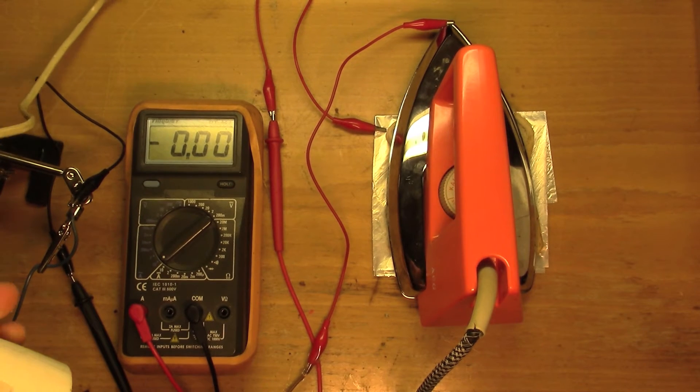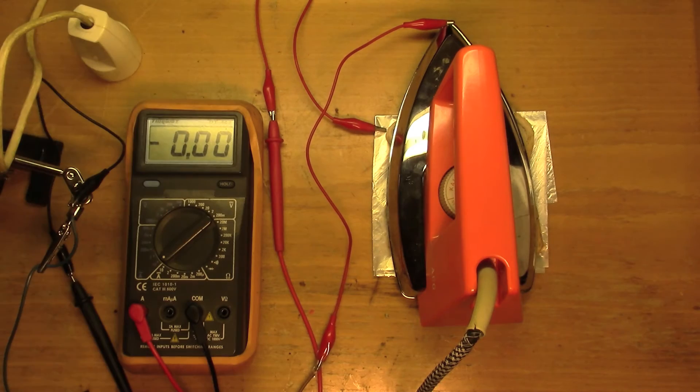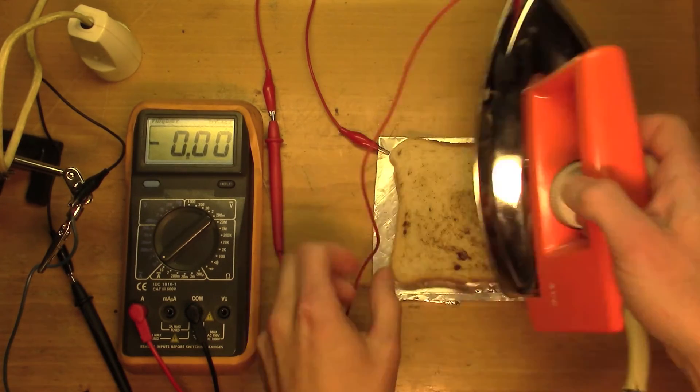Oops. Okay. Out of fear the toast starts sweating, resulting in a better connection to the metal surfaces, allowing too much current to flow through. The piece of bread needs to be drier.